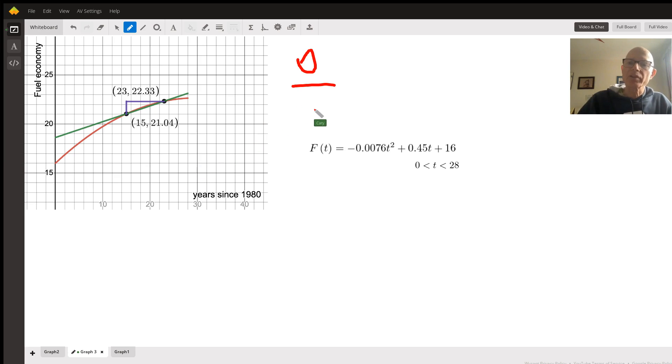It's not going to be zero, that's just a symbol. And our run, or this distance, we can find by getting the difference between our two inputs, 23 and 15. And that will go on the bottom of our fraction.